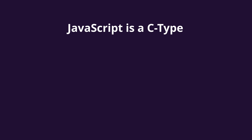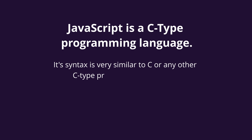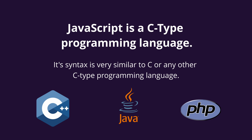JavaScript is a C-type programming language which means its syntax is pretty similar to C and other C-type programming languages. So if you have some experience in any C-type programming language such as C, C++ or even PHP, you would feel at home. Even though the syntax is pretty similar to C-type languages, the behavior is tricky in some parts, which we will discuss throughout the course.